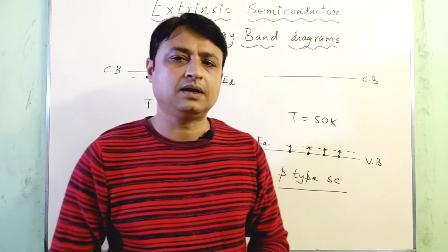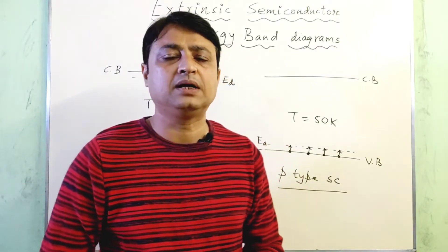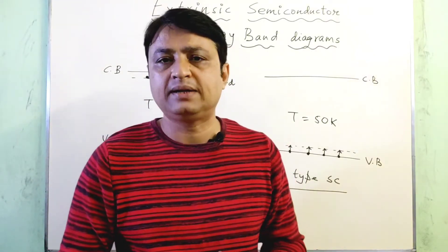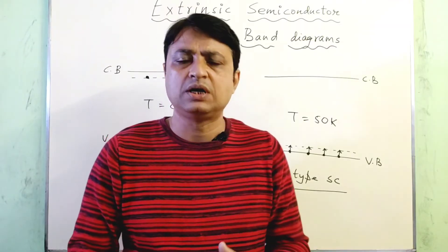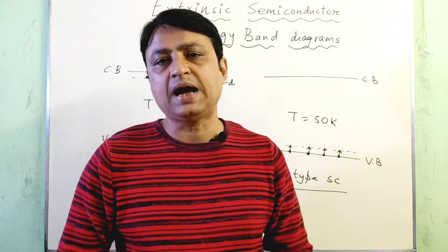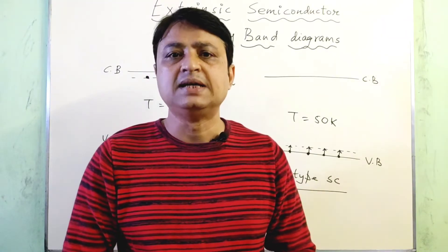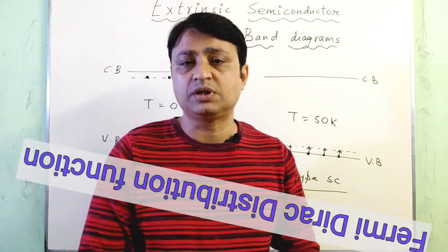Now to analyze the electrical conductivity of either a p-type or an n-type semiconductor, we must calculate the number of electrons or the number of holes in the conduction band. For this reason, we have to introduce a distribution function, that is the Fermi-Dirac distribution function.